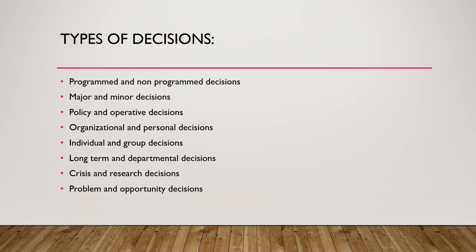Long-term and departmental decisions: long-term decisions relate to the main objectives of the organization. Departmental decisions vary according to the needs and preferences of departmental managers. Crisis decisions are made when an organization faces a problem that must be sorted out immediately. Research decisions are made when you plan to launch a new product in the future or want to use upcoming opportunities.